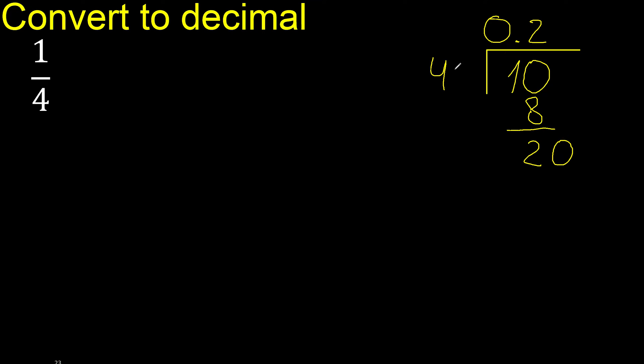20. 4 multiplied by 5 is 20. Subtract. 20 minus 20 is 0. Therefore finish.